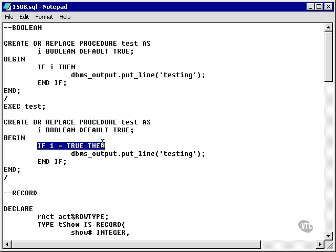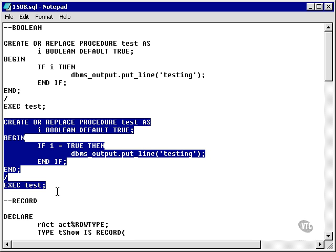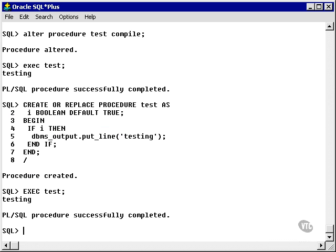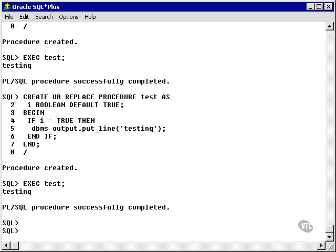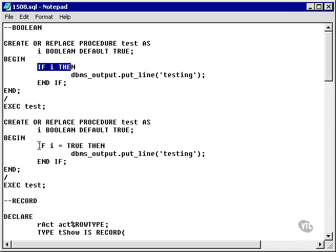Let's go and change this because we can do the same thing by simply asking the Boolean variable if it is true, as in if I equals true. This will work as well. Now, let's copy the exact test command, recreate and replace the procedure, recompile it and re-execute it, and I get exactly the same result. In other words, either this syntax or this syntax is fine as far as PL/SQL is concerned.